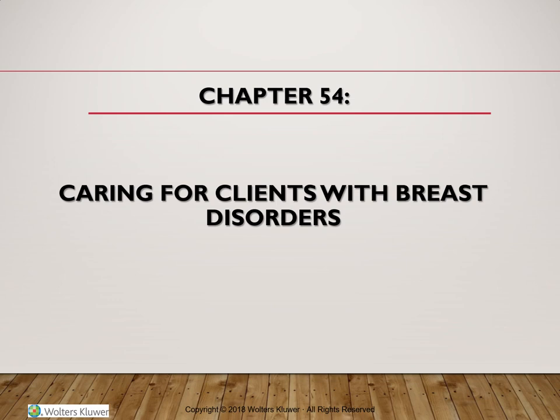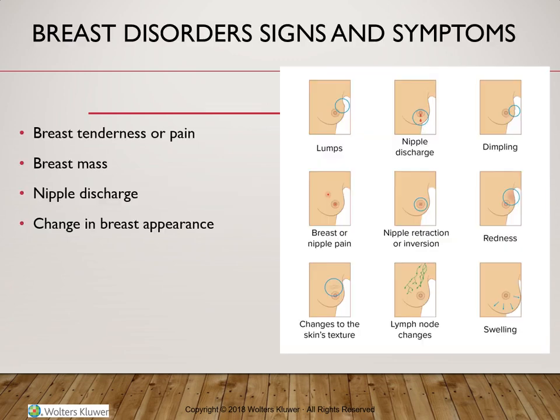Chapter 54 covers conditions related to the breast, including both benign and malignant breast disorders. When talking about the breast, we consider it part of the female reproductive system. Being part of the reproductive system makes the breast responsive to all hormonal cycle phenomena, with changes associated with ovulation, menstruation, and pregnancy.